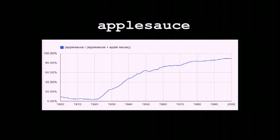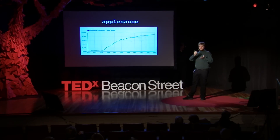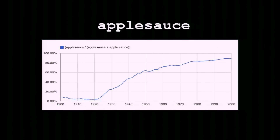This gets us to applesauce. Applesauce can be written as a compound word without a space, or as a pair of words with a space between them. It turns out applesauce usage goes up and down over time, but if we look at applesauce-as-one-word divided by applesauce-one-word plus applesauce-two-words, we see a gradual shift — from 5 or 10% of the time being a compound word, to 90% of the time being a compound word. I don't know if this was caused by product marketing or an influx of German immigrants fond of compound words and applesauce, but this is a genuinely interesting cultural question.